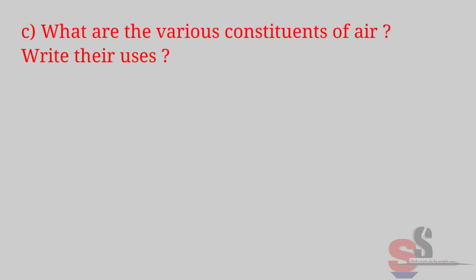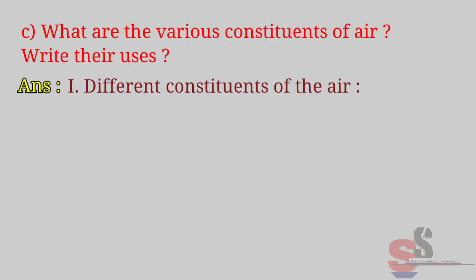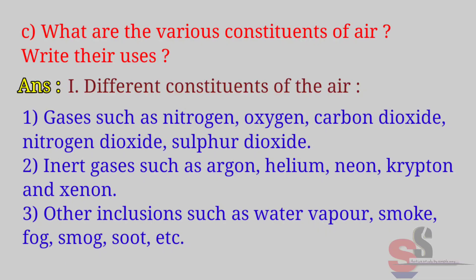C. What are the various constituents of air? Write their uses. Answer: Different constituents of air include gases such as nitrogen, oxygen, carbon dioxide, nitrogen dioxide, sulfur dioxide; inert gases such as argon, helium, neon, krypton and xenon; and other inclusions such as water vapour, smoke, fog, smog, soot, etc.